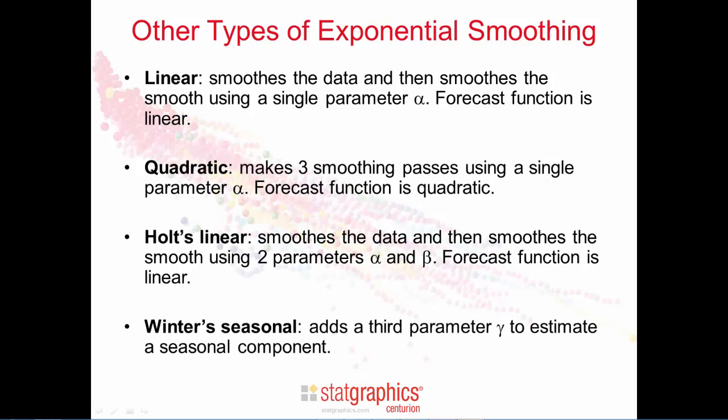Finally, winter's seasonal exponential smoothing uses three parameters: alpha, beta, and gamma. It differs from the others in that it's designed to smooth seasonal data.